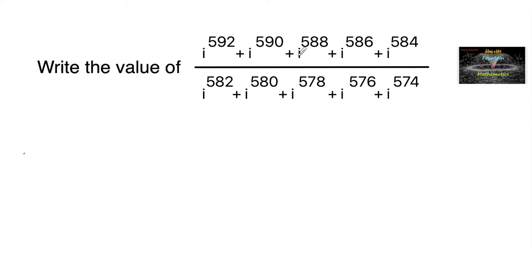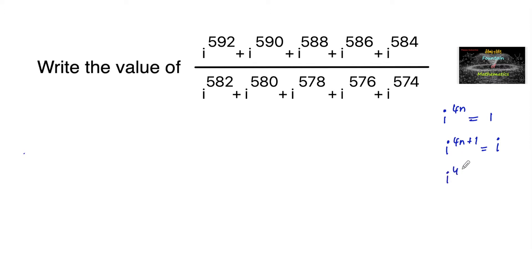We use the concept that i to the power of 4n equals 1 — that is, when the power of i is divided by 4 and the remainder is 0, the result is 1. When the remainder is 1, i to the power of 4n+1 equals i. When the remainder is 2, i to the power of 4n+2 equals i squared, which is minus 1. And when the remainder is 3, i to the power of 4n+3 equals minus i.